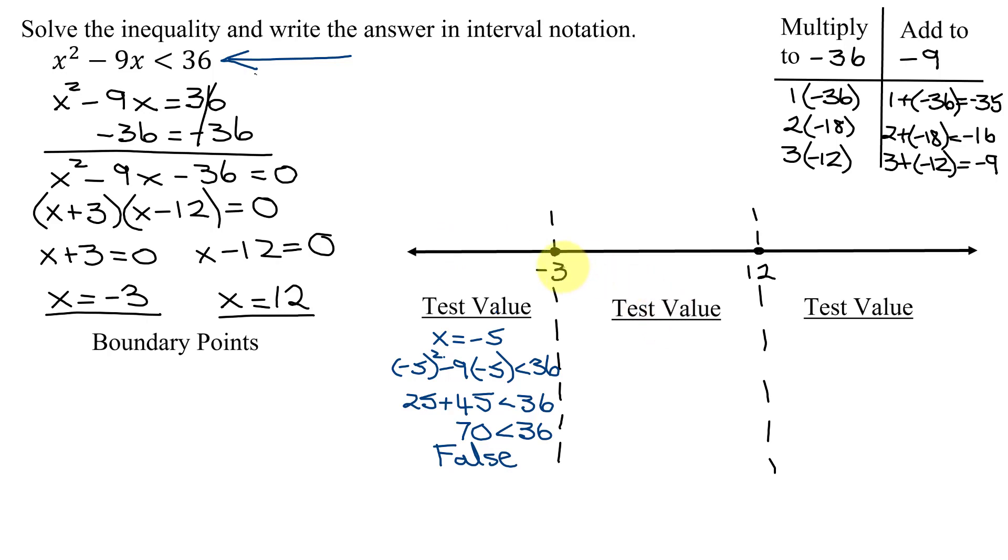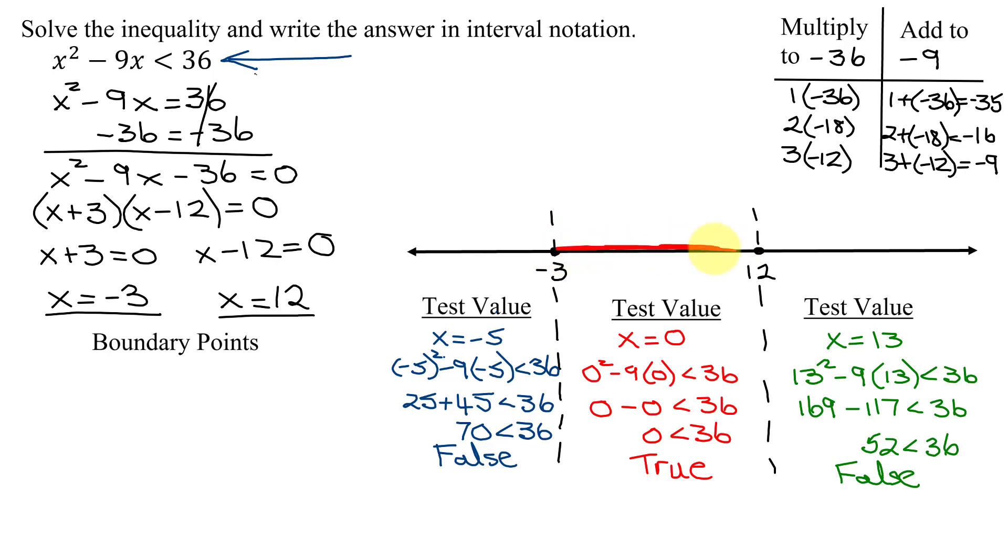Moving on to the next interval between negative 3 and 12, I'm going to pick x equals 0. I like x equals 0, it's lazy arithmetic. When x equals 0, plugging it into the original inequality, I get 0 squared minus 9 times 0. Is that less than 36? Is 0 less than 36? That is true. So I want this whole region here. So I need everything between negative 3 and 12.